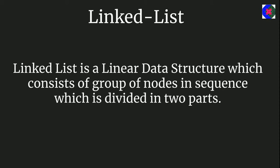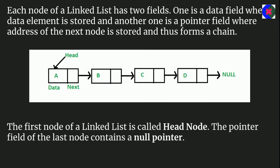A linked list is a linear data structure which consists of a group of nodes in sequence, divided into two parts. Each node has a data field where data elements are stored, and a pointer field where the address of the next node is stored, thus forming a chain. The first node is called the head node, and the pointer field of the last node contains a null pointer. In the diagram, A is the head node and D is the last node, which points to null. Unlike arrays, linked list elements are not stored at contiguous locations — they are linked using pointers.